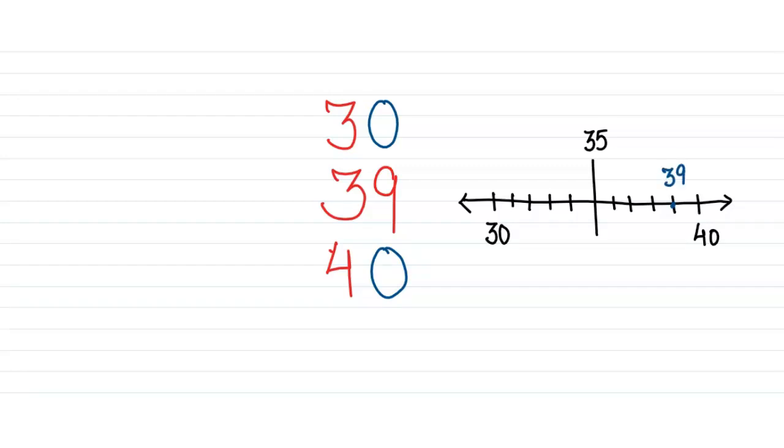Here goes number 39. Now 39 is closer to which ten? 30 or 40? It is 40. So we round off 39 to 40.